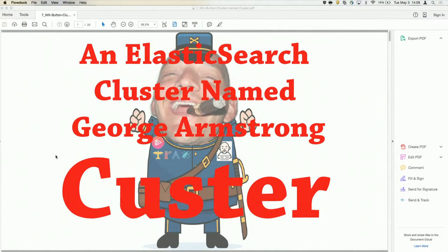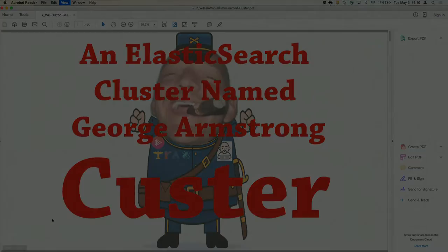All right, so now we're going to hear about an Elasticsearch cluster named George Armstrong Custer by Will Button. Hey everyone, my name is Will Button. I'm on the DevOps team at Trax Technologies, and I'm an instructor and author for Egghead.io and Pluralsight.com.